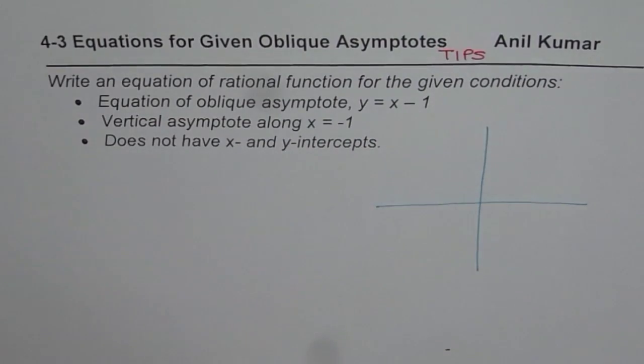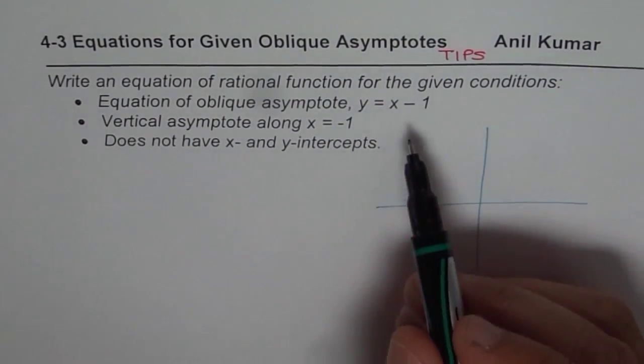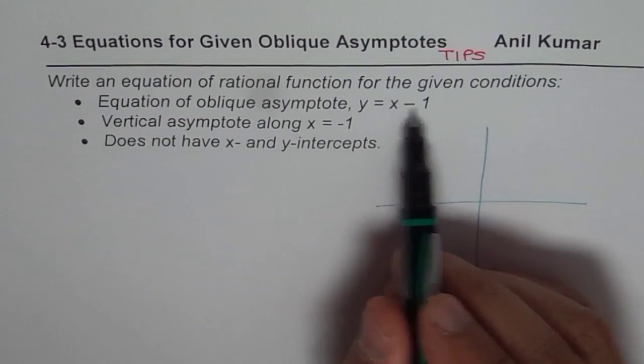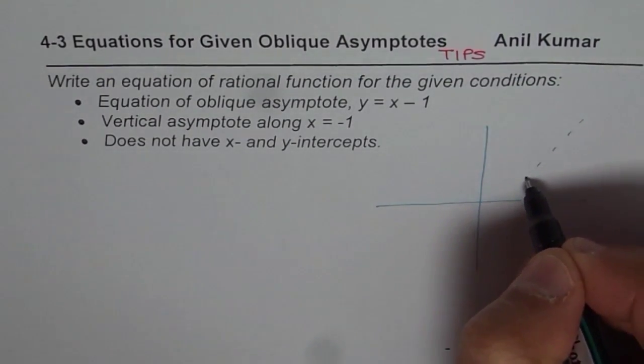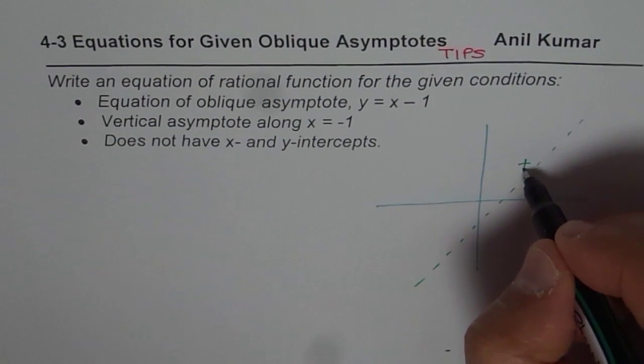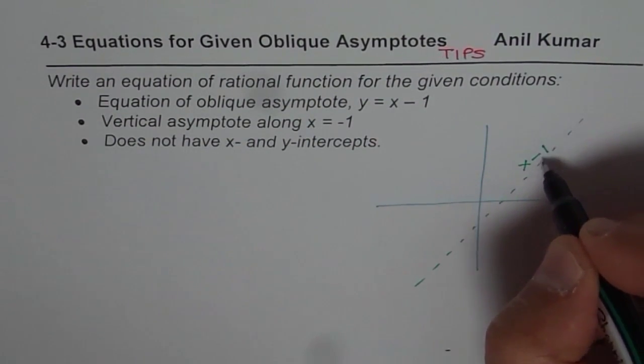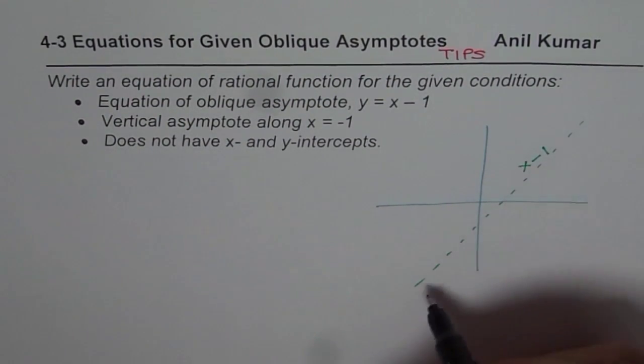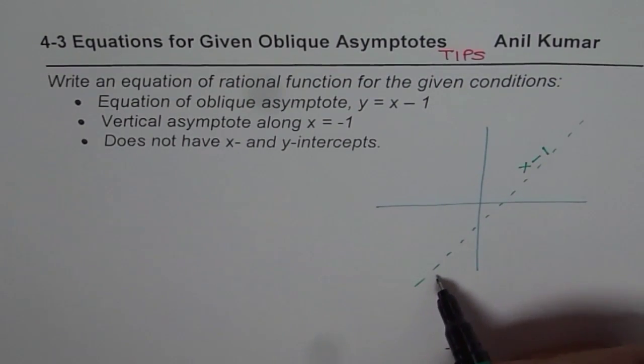oblique asymptote means that the function's end behavior is approaching this line. So let's say this is the line x = -1. So this is y = x - 1. So the function is approaching this line, that becomes the oblique asymptote.